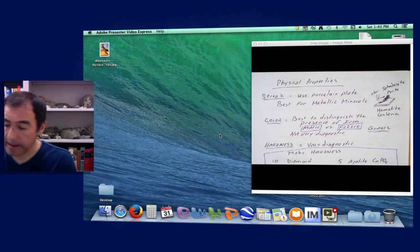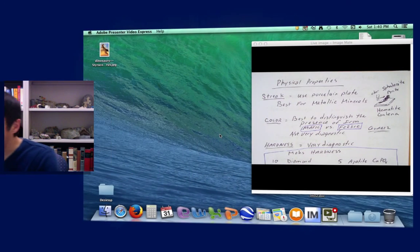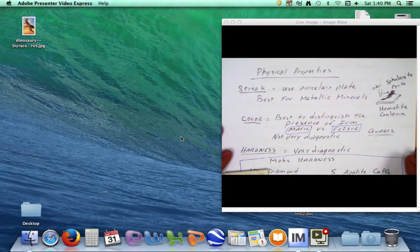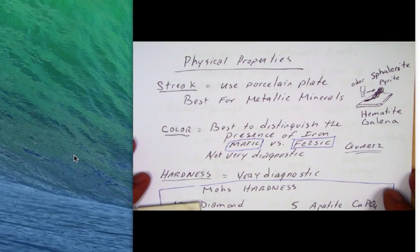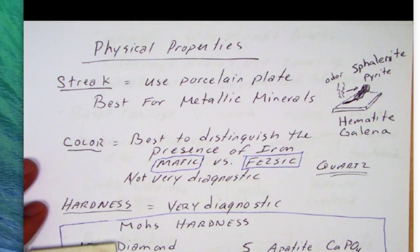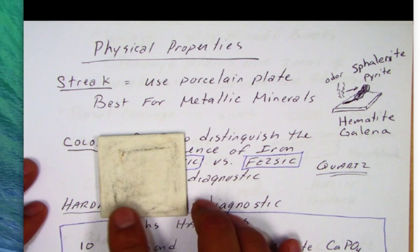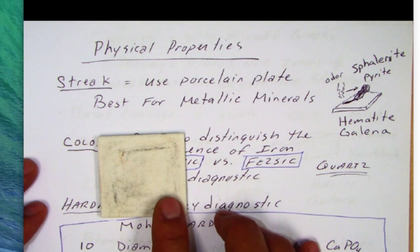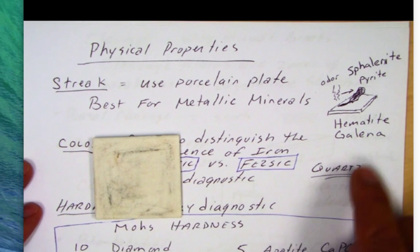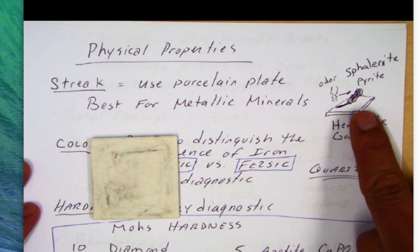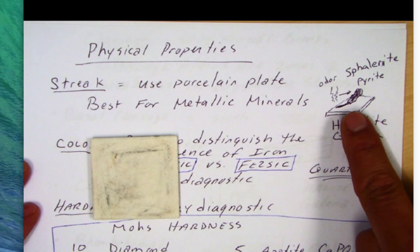The first property I want to look at is called streak. Some minerals will leave a characteristic color when you scratch them against a porcelain plate. You scratch the mineral across the plate and record the color, which would be diagnostic for that mineral.